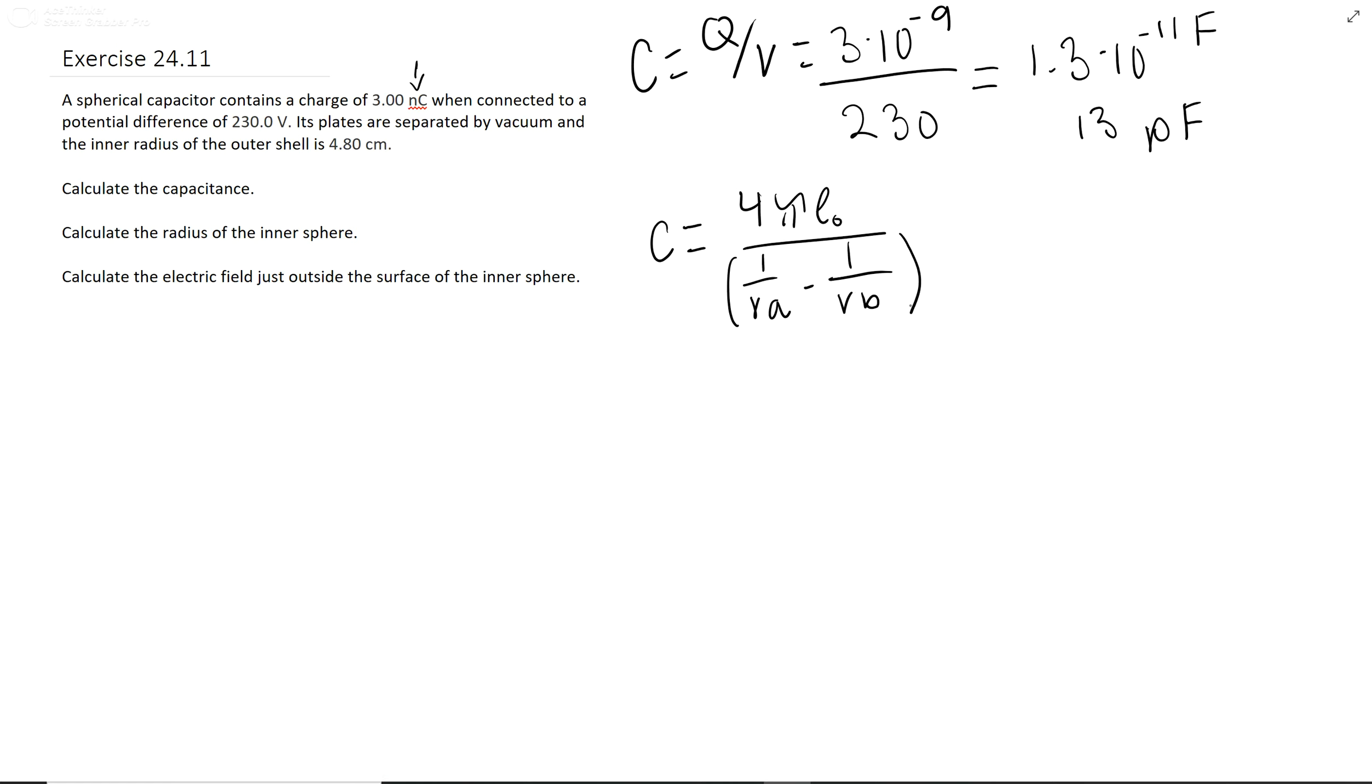But once you have that, it's fairly simple. You have 1.3 times 10 to the negative 11 equals 4 pi epsilon naught over 1 over the inner radius (which is what we're finding) minus 1 over the outer radius, which is 4.8 times 10 to the negative 2.